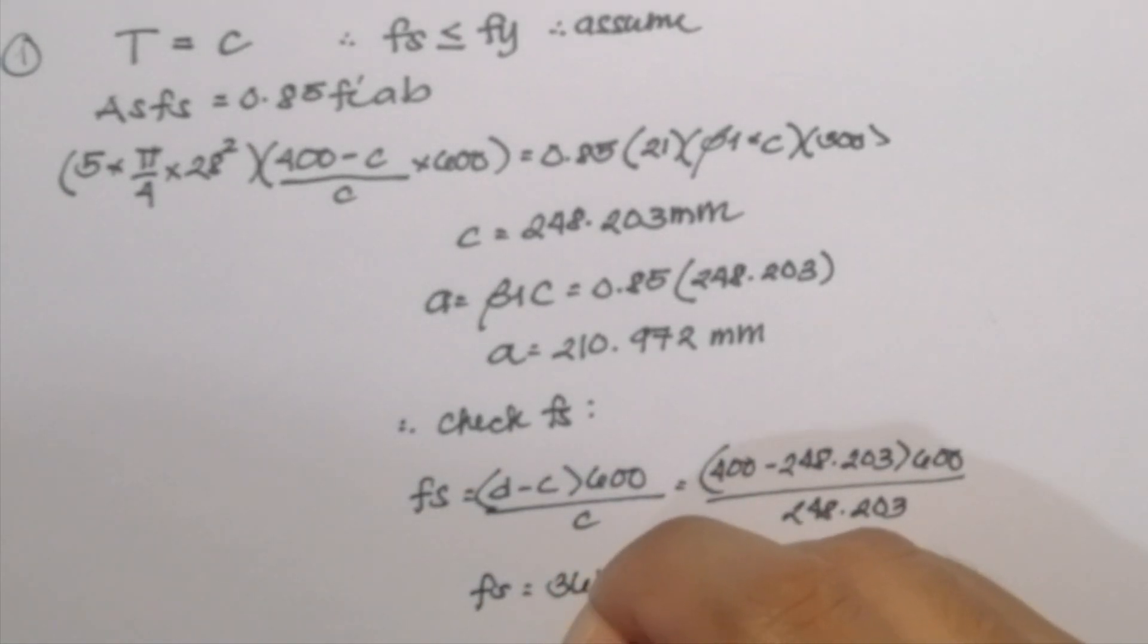So our value for Fs is equal to 366.95 MPa and it is obviously less than our yield strength of the steel. So we can say that our assumption is correct.